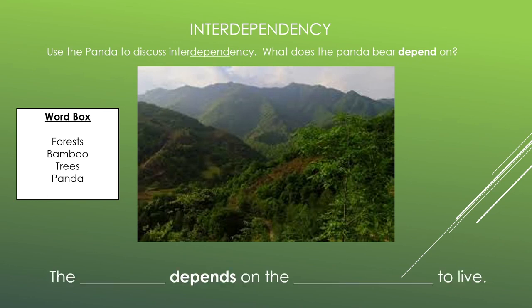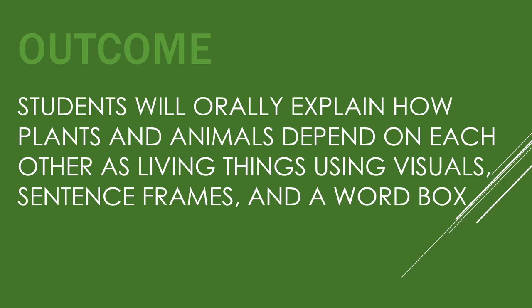Let's look at another one. What is this a picture of? Let's look at the sentence to help us: the blank depends on the blank to live. Which animal have we been talking about? And where does it live? The panda depends on the forest to live. You did an awesome job today. Let's make sure we accomplish everything we said we would. Students will orally explain how plants and animals depend on each other as living things. We talked about how different animals eat different plants in order to survive, or they use plants as homes. We did this with visuals, sentence frames, and a word box. See you next week.